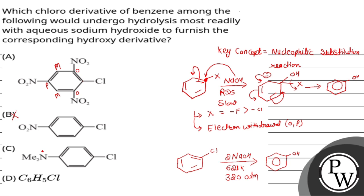In option C, an electron-releasing group is present, so that is also not possible. In option D, plain chlorobenzene is given, which requires drastic conditions. Hence option A is the correct answer.